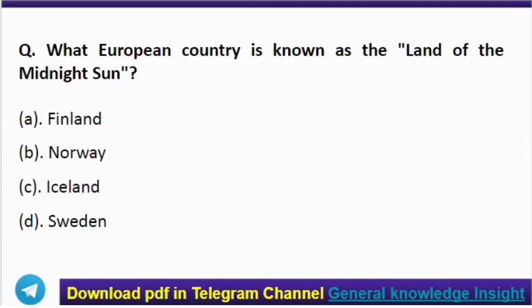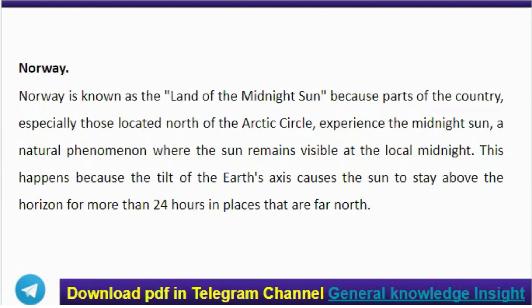Next question: which European country is known as the land of the midnight sun? The correct answer is option B — Norway. Norway is known as the land of the midnight sun because parts of the country, especially those located north of the Arctic Circle, experience a natural phenomenon where the sun remains visible at local midnight. This happens because the tilt of Earth's axis causes the sun to stay above the horizon for more than 24 hours in places that are far north.